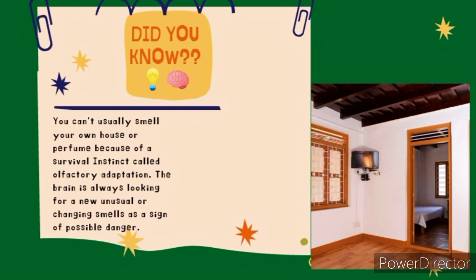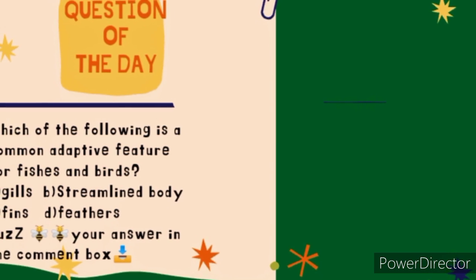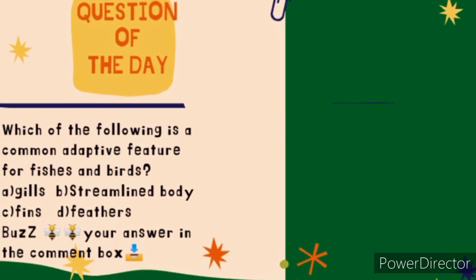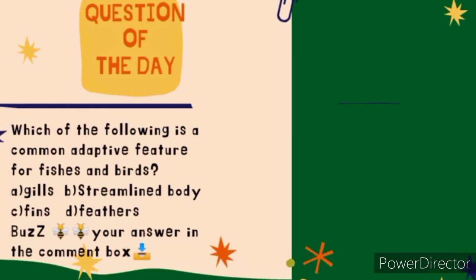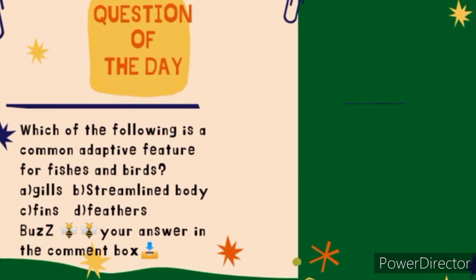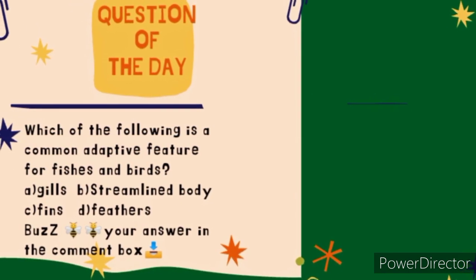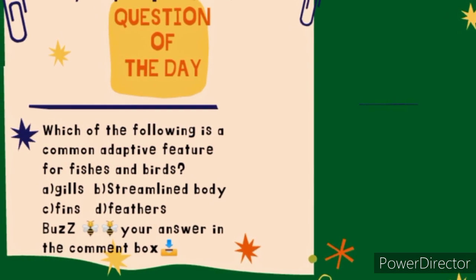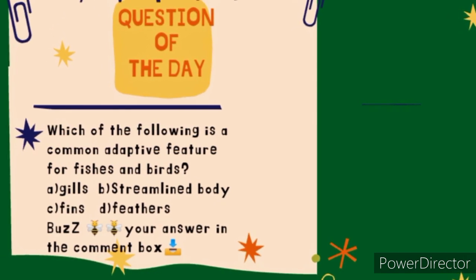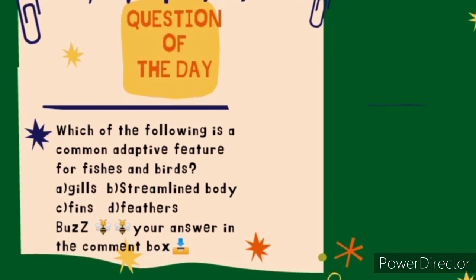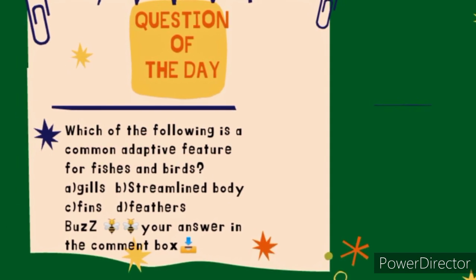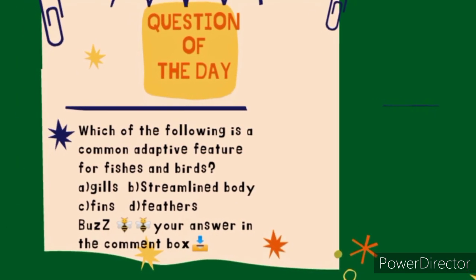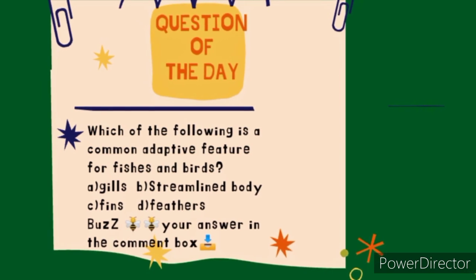At the end of the video, here's a question for you: which of the following is a common adaptive feature for both fishes and birds? Option A: Gills. Option B: Streamlined Body. Option C: Fins. Option D: Feathers. Post your answer in the comment box.